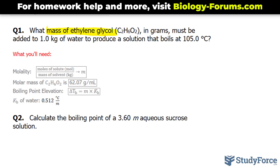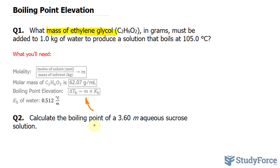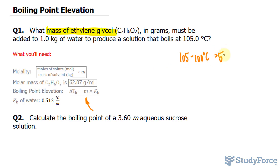The formula for the boiling point elevation is also shown here, and we already have most of what we need. For example, we already know the constant — it's 0.512 — and we also know delta T, because water boils at 100 degrees Celsius, and this boils after adding the solute at 105. So the change is 105 minus 100 degrees Celsius, and that's 5.